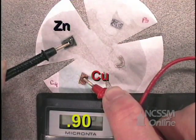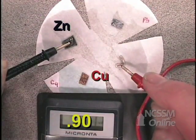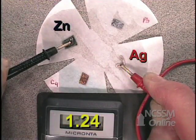We have a positive value with the red on copper and the black on zinc. Red on silver, black on zinc.